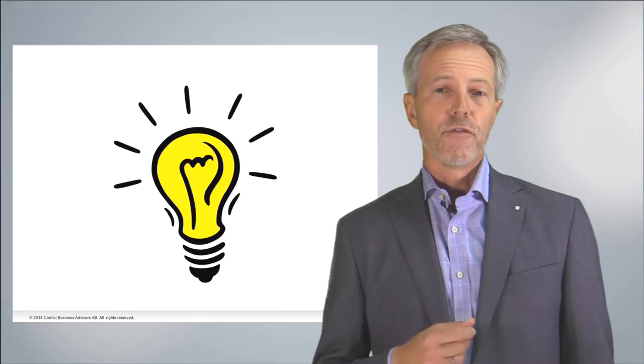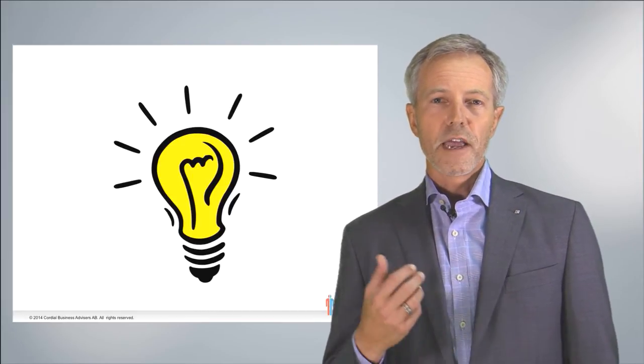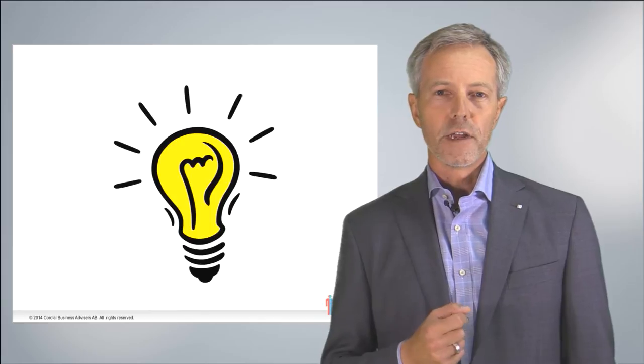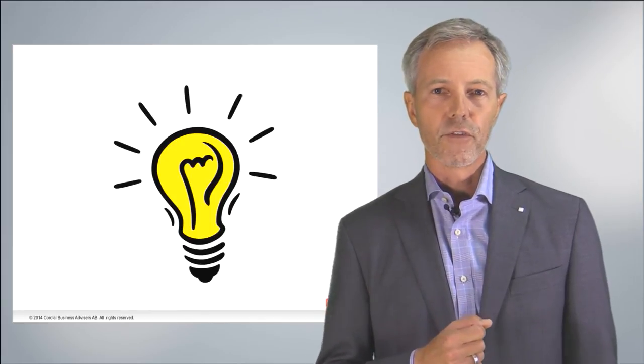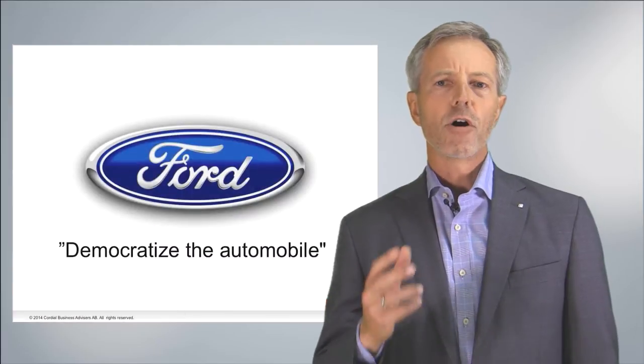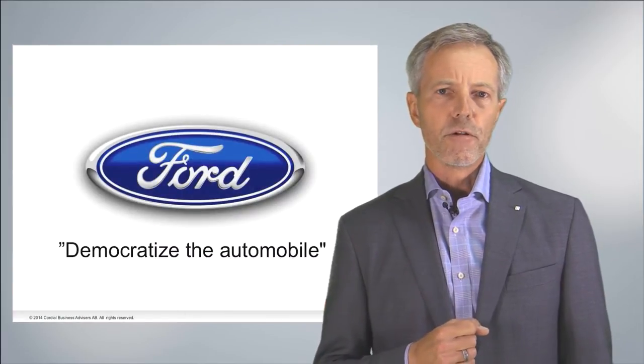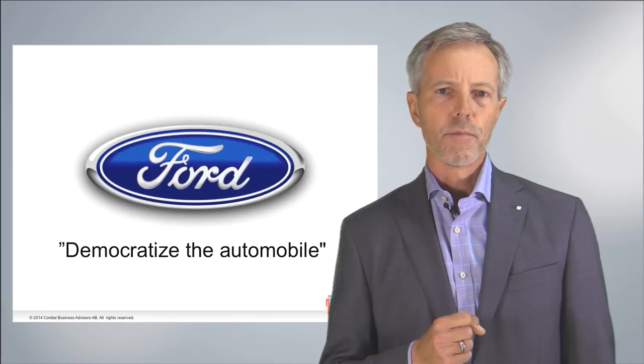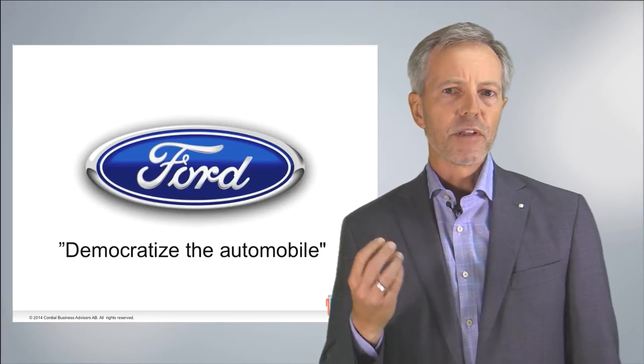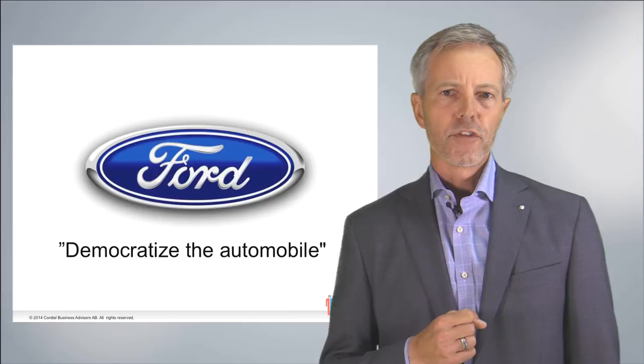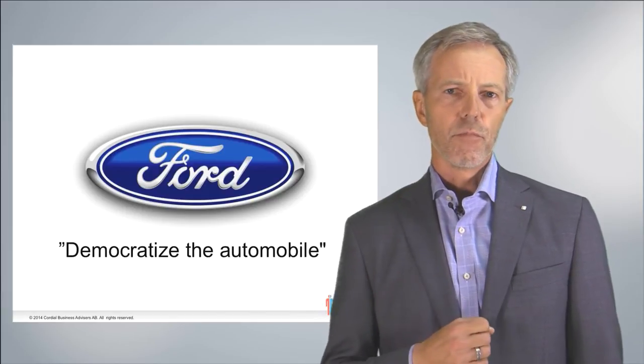The famous Jeff Bezos of Amazon wanted to make every book ever written available in your hands within 60 seconds. This man, Henry Ford, in a picture taken in 1903, was obsessed with making cars. He wanted to democratize the automobile. We're going to use Henry Ford and the Ford Motor Company to help guide you through the concept of business architecture and the notion of the business model.